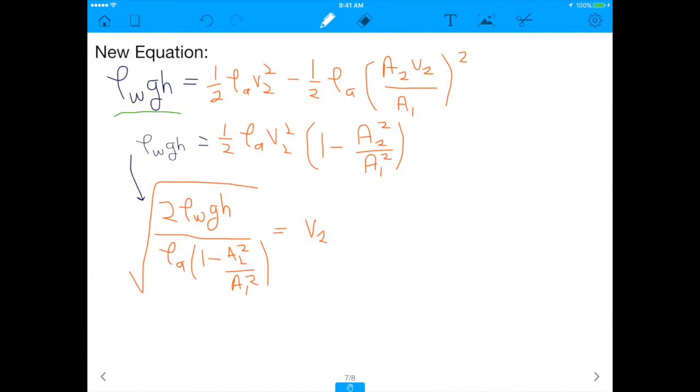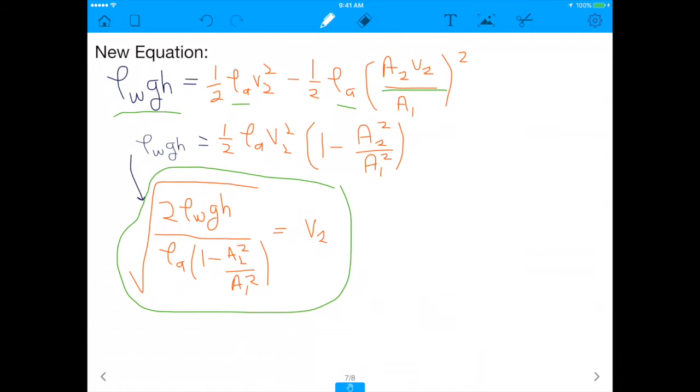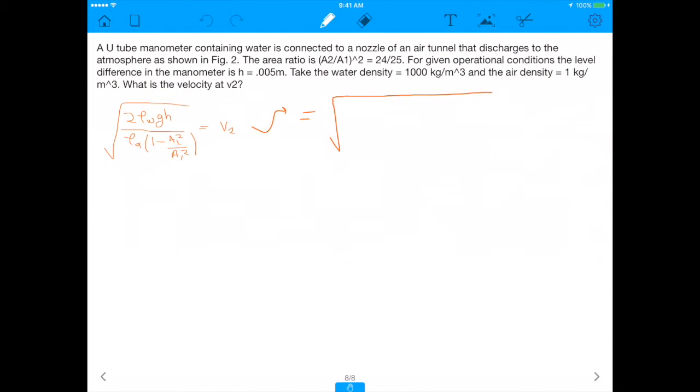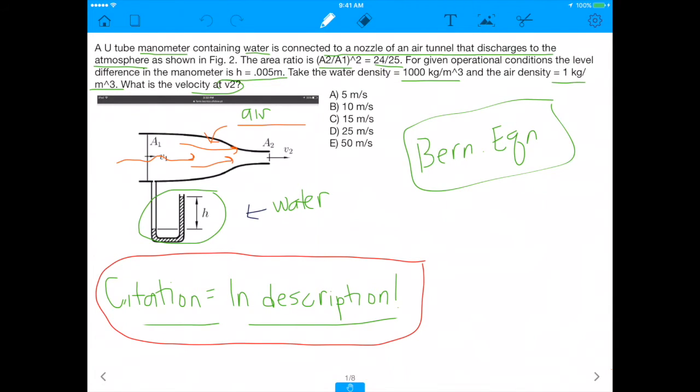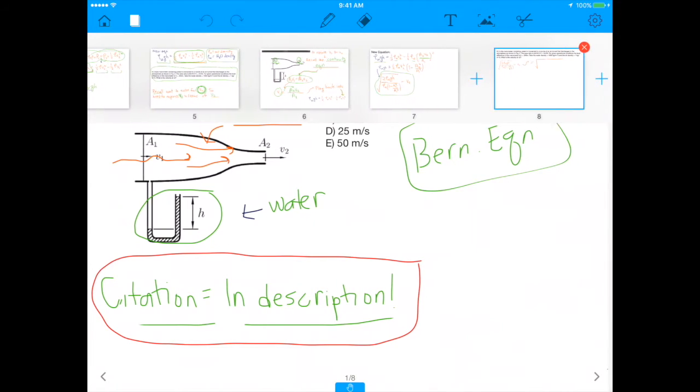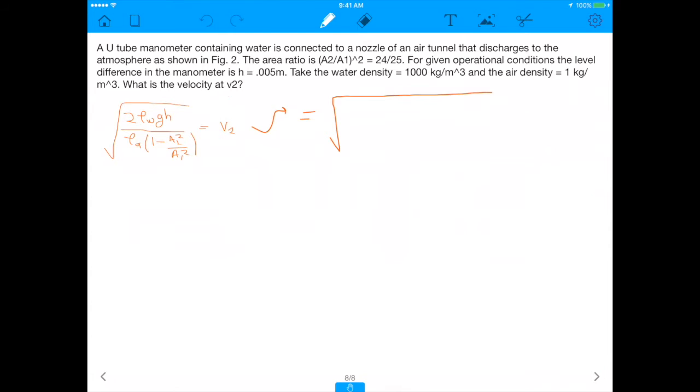Let's plug it back in. If we do that, we'll get that the new equation will be rho of w times g times h equals one-half rho of a times v2 squared minus one-half rho of a times (a2 v2 over a1) squared. This is the substitution of v1. You do some algebra and you find out that v2 equals the square root of [2 rho of w times g times h over rho of a times (1 minus a2 squared over a1 squared)]. This is crazy, this is absolutely crazy. If you wanted to put this all into perspective, this is all going back to this very first question we had. It's crazy that we even got this far, but let's keep going. Now let's just plug in everything we're given.